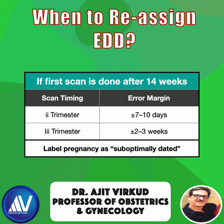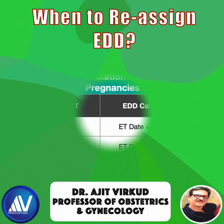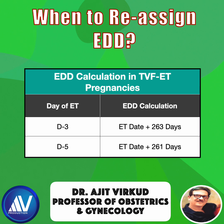In IVF pregnancies, EDD is calculated from the embryo transfer date. Add 263 days for a day 3 transfer and 261 days for a day 5 blastocyst transfer. Ultrasound dating should not be used to revise it.